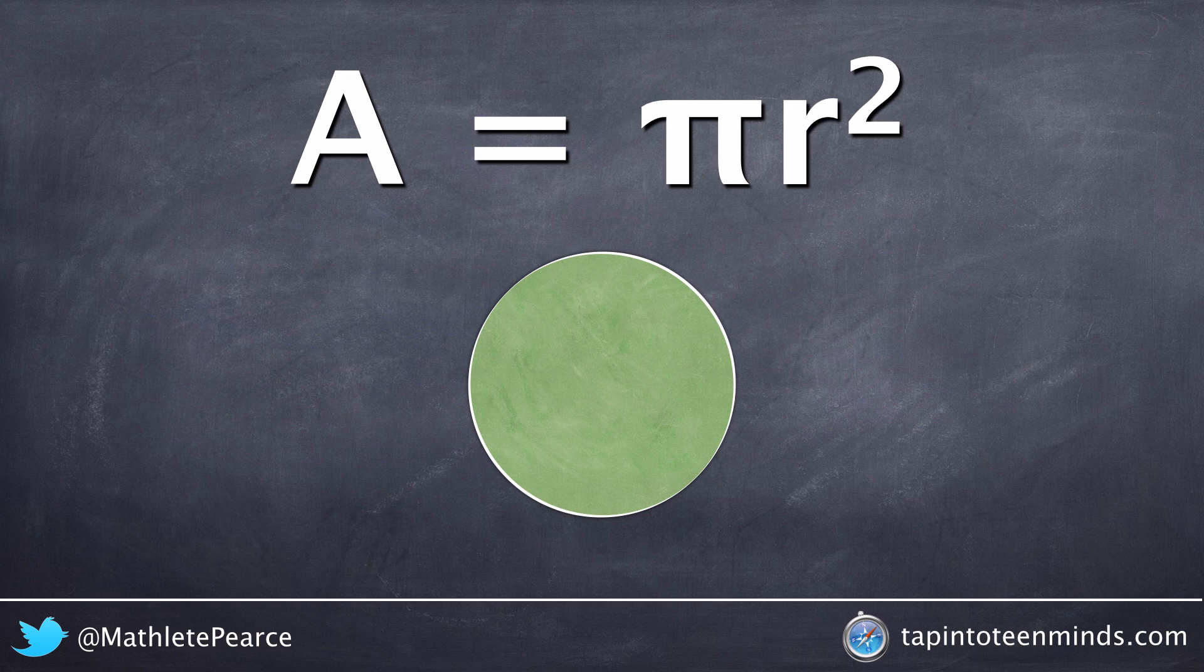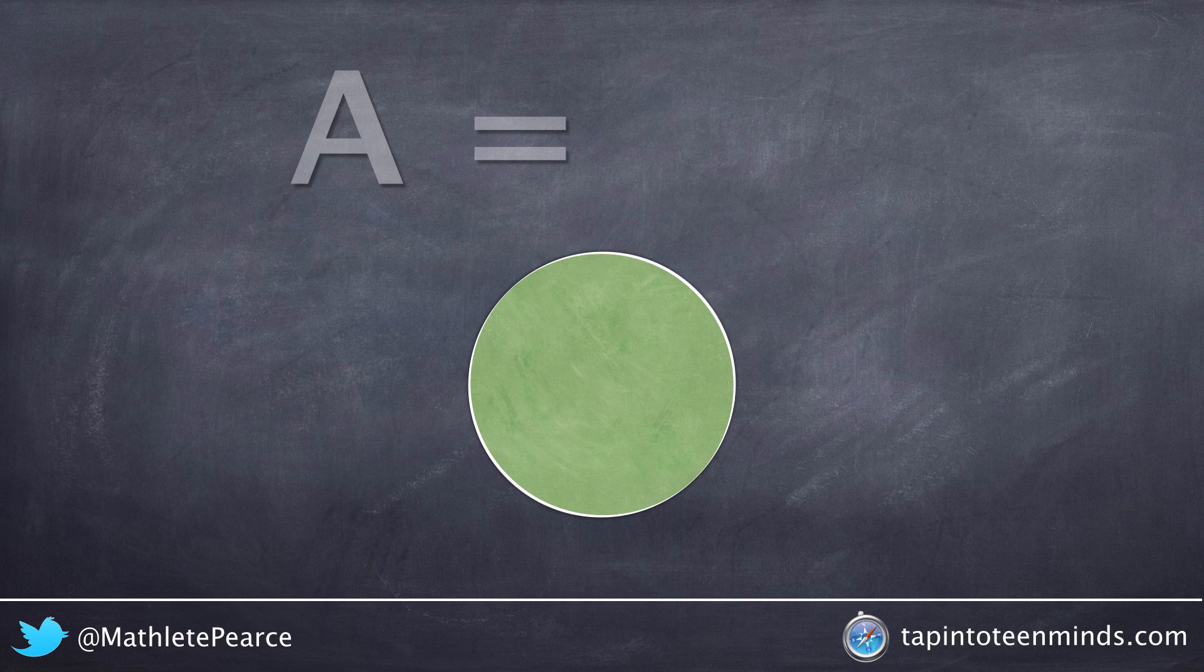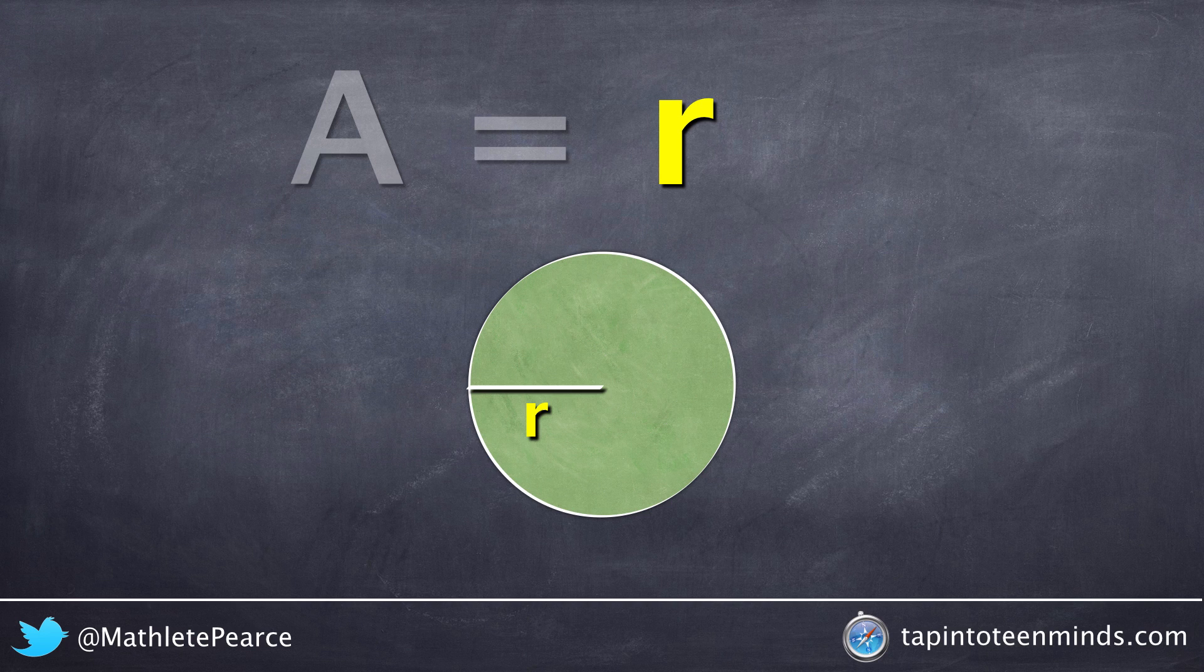But where does the pi r squared actually come from? So let's take a look. If we strip away the formula and begin just with one r, we can see on our circle that's the radius.